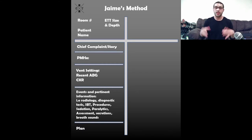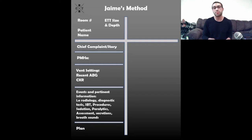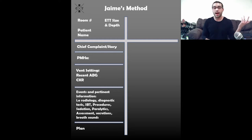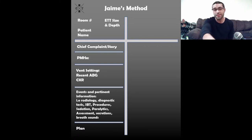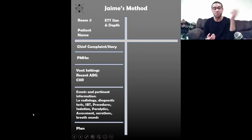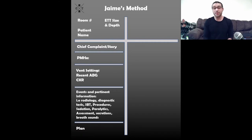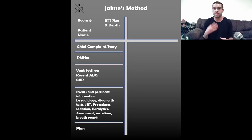I had a clipboard that I would take around with me and divide into two — the left side was one patient, the right side was another. At the top you'd have the room number, the patient's name, ET tube size and depth. This was very helpful to keep track of everything because there are so many things happening with our patients. It's a very dynamic, fluid situation — especially in the ICU where things are constantly changing.